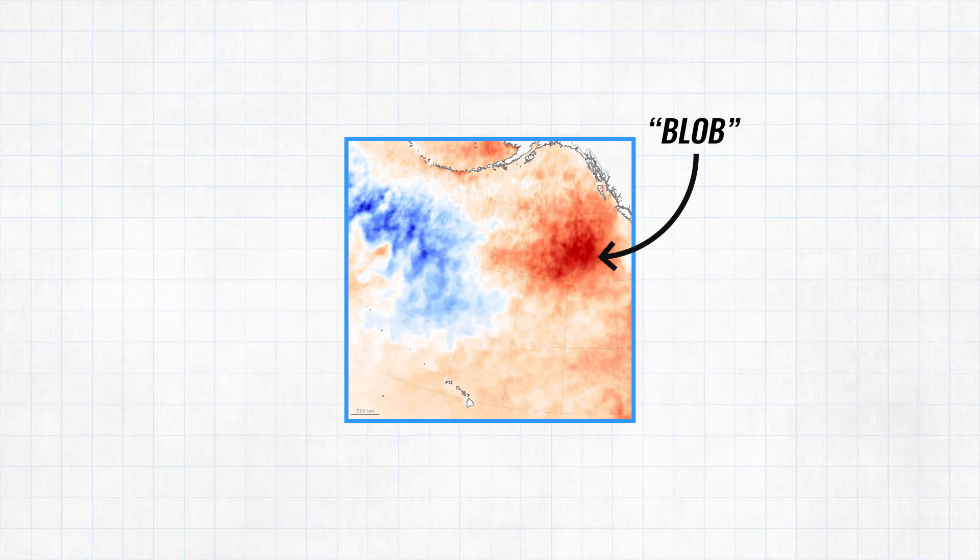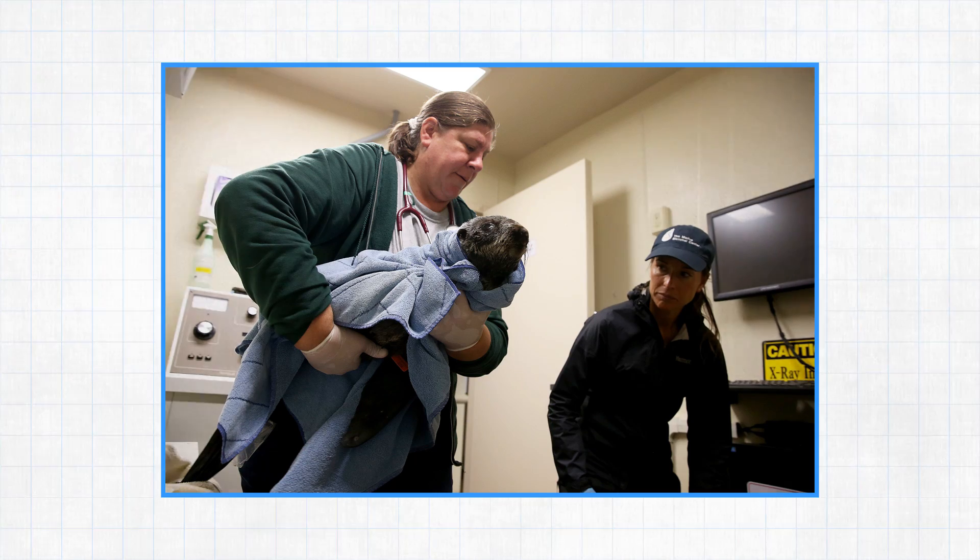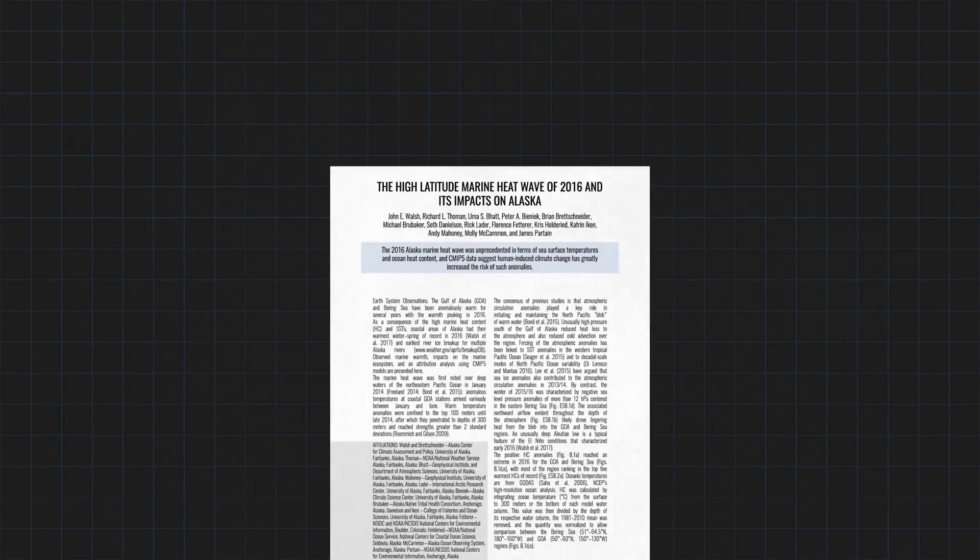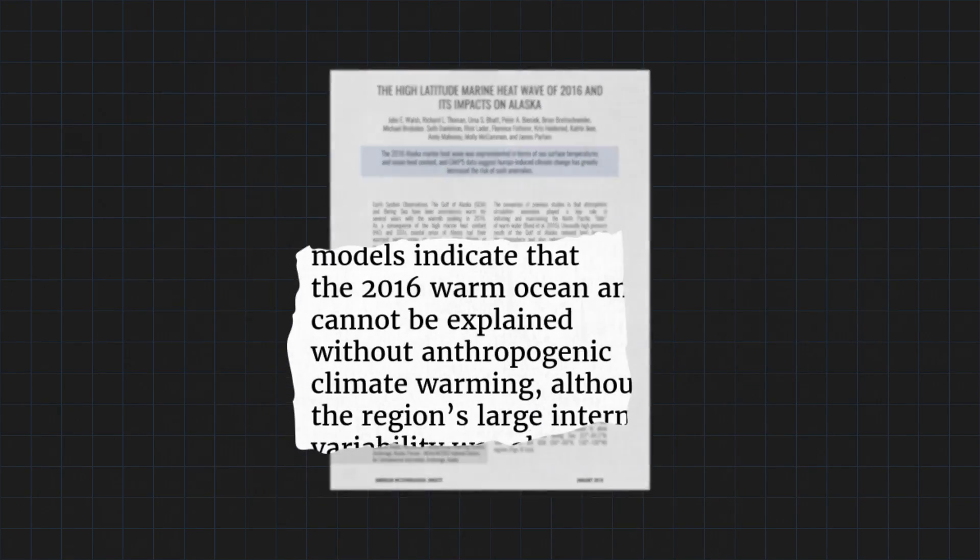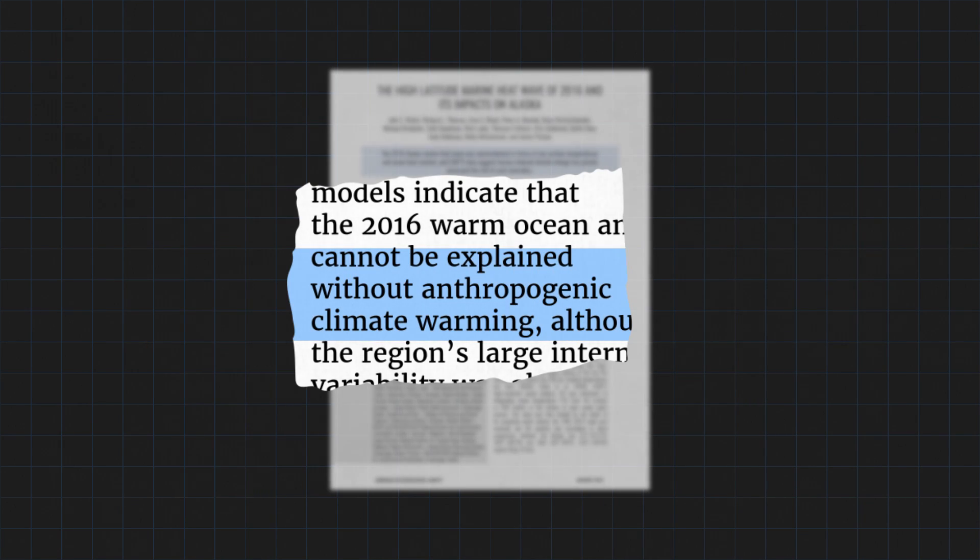In 2015, meteorologists were obsessed with the quote-unquote blob of warm water in the Pacific that killed off lots of fish and starved sea lions and seabirds. A study published by the American Meteorological Society said that without climate change, the blob would not have happened. Climate change doesn't create unusual weather. It just makes it way worse.